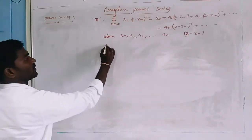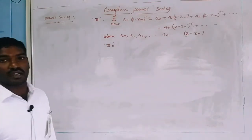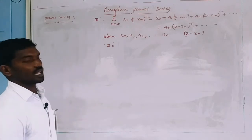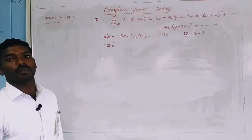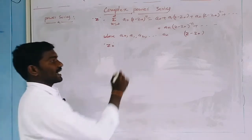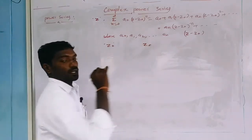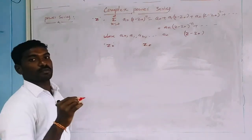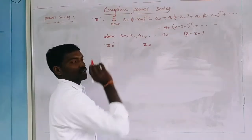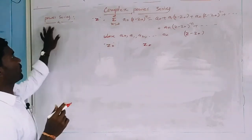Here, Z-naught is called the center of the power series. This is also called the power series in powers of Z minus Z-naught about the point Z-naught. This is the definition of power series.